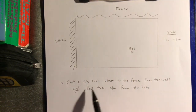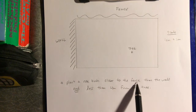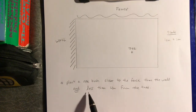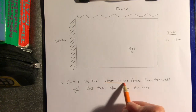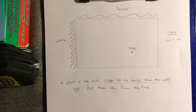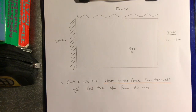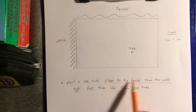These are my conditions: I want it to be closer to the fence than the wall, and I also want it to be less than four meters from the tree. This is how questions are set up on exams and GCSE homework. So I have two conditions. First, I'll figure out where all the points are for being closer to the fence than the wall. Then I'll figure out the second condition, and the overlap is where I meet both.